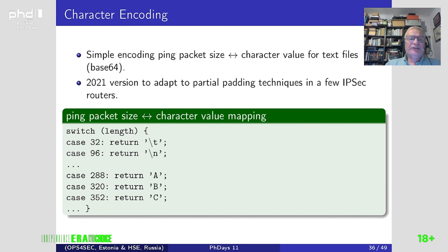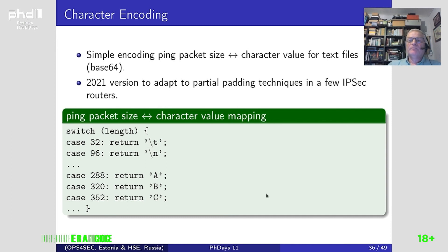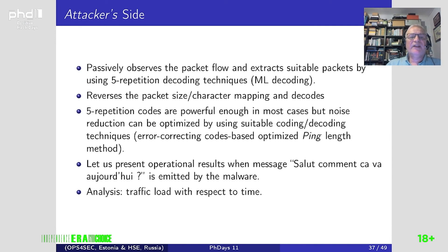On the attacker's side, we passively observe the packet flow, extract suitable packet sizes, and use maximum likelihood decoding based on the five-repetition code. This new correspondence table was built last year to adapt to some IPsec routers, compared to the 2008 version.